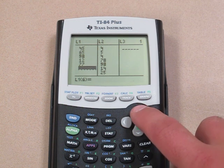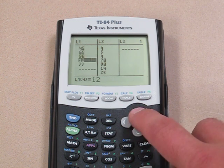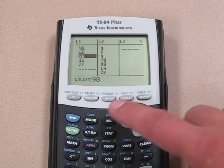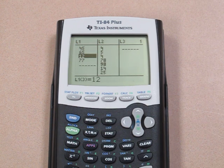Suppose we didn't want the value 98 there. We could scroll to the 98 so it's highlighted and then press DELETE. That will remove the value from our list.